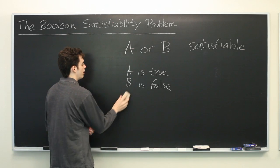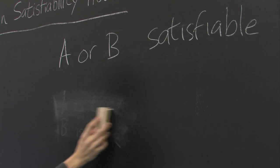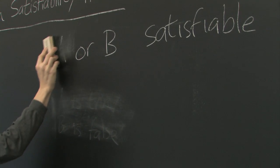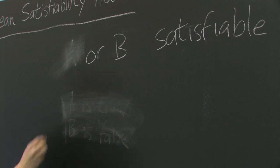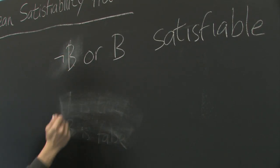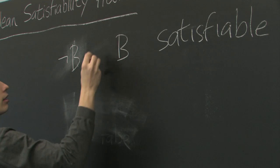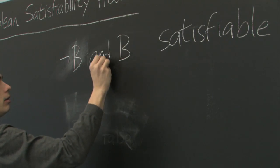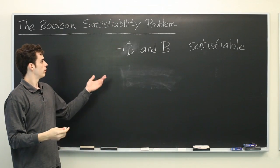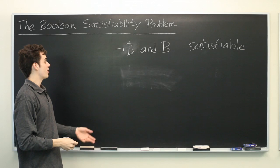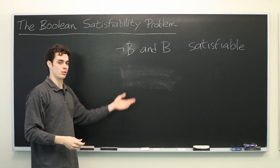Now if we were to have something for which there is no solution, let's say we have not B and B, well clearly there is no way that we can assign a value to B such that this will evaluate to true.